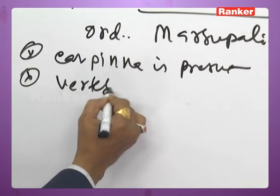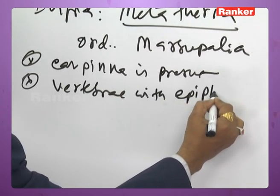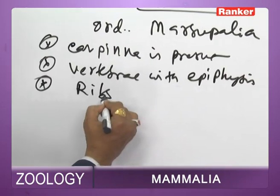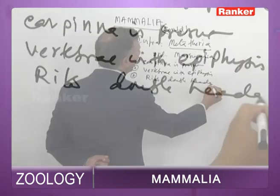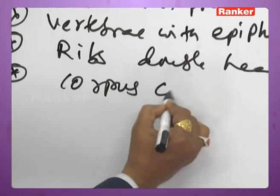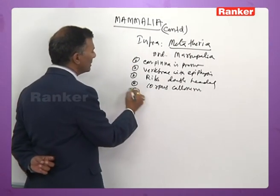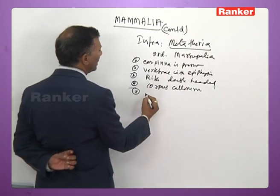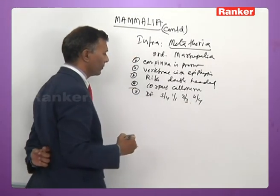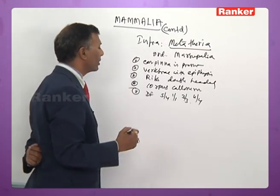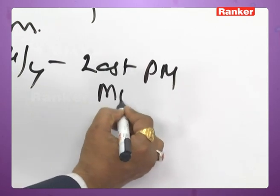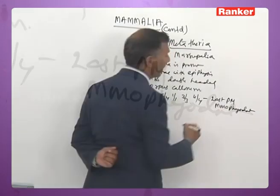Vertebrae are with epiphysis. Ribs are double-headed. Corpus callosum is present. The dental formula is 5/4, 1/1, 3/3, 4/4. The last premolar is monophyodont — it remains while the remaining teeth are replaced.